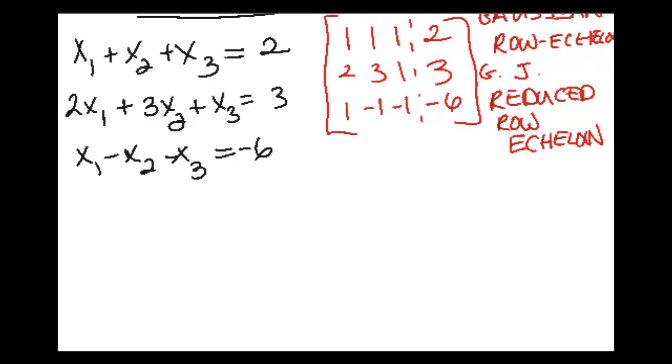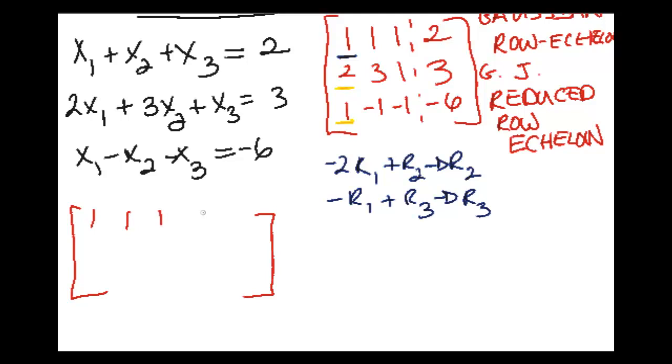Alright, so the first step in this case would be to get this to be a leading one, which it already is, thank goodness. So what I'm going to be doing after that is making these two spots zeros. And in order to do that, I'm going to go ahead and do two row operations at once. We're going to do a negative 2 times R1 plus R2 to give me a new R2.